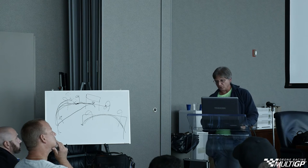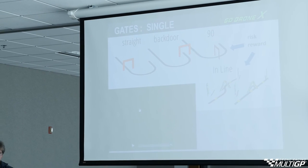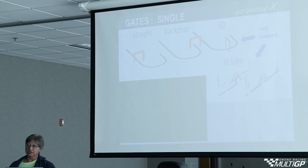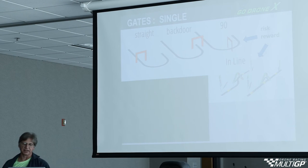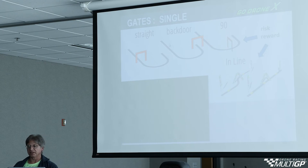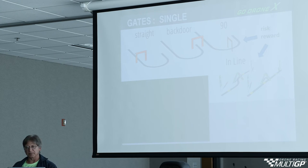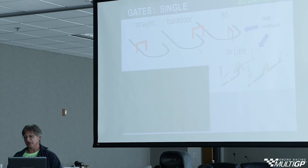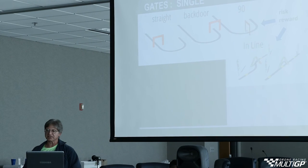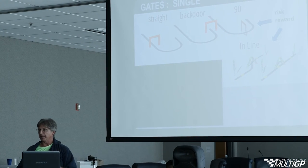Switchbacks into turn one help avoid crash fests. For gates, the boring approach is a straight shot through a gate — everybody overshoots, turns around, and comes back. Instead, consider the back-door method where racers swing around and come from the back side. Good racers will start yawing or rolling before they get through the gate, using momentum rather than stopping.